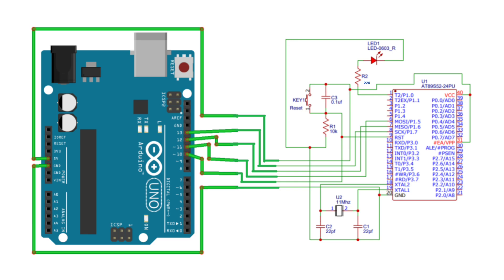Connect digital pin 13 of the Arduino Uno board to the SCK pin of the AT89S52 microcontroller, and connect digital pin 10 of the Arduino Uno board to the reset pin of the AT89S52 microcontroller.